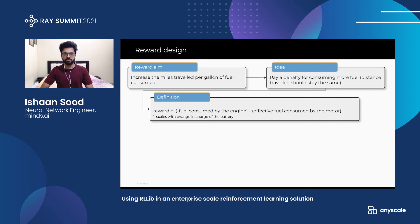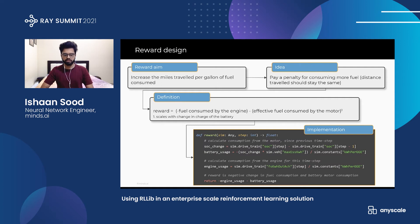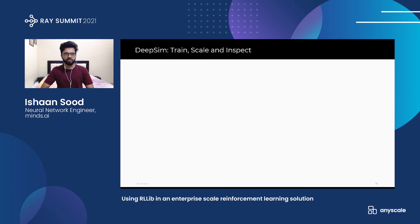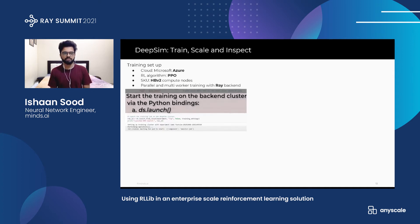With this reward function, the simulator is fully integrated with DeepSim and we are ready to launch training runs. We use the PPO algorithm from the RLlib Ray library, launching training runs on Azure cloud using HPV2 compute nodes, with all parallel multi-worker training managed by the Ray backend. To launch a training run, we specify all the Ray RLlib settings and DeepSim settings in a JSON file, then use either a command line interface or a Jupyter notebook interface to launch our run using the DeepSim command ds.launch_from_cloud, where we specify the experiment name, backend, verbosity, and training settings.